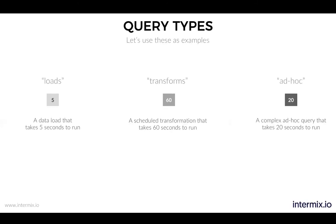Let's go through three types of queries. We have loads — these are jobs that load data — and we have transforms, which are transformations you run once your data is in the cluster. This is more like ELT: you're extracting, loading, and then transforming. And then you have ad hoc queries — once these transformations are complete and data is available in the cluster, your analysts can query it. As an example: a load runs five seconds, a complex transform runs 60 seconds, and an ad hoc query may run 20 seconds.